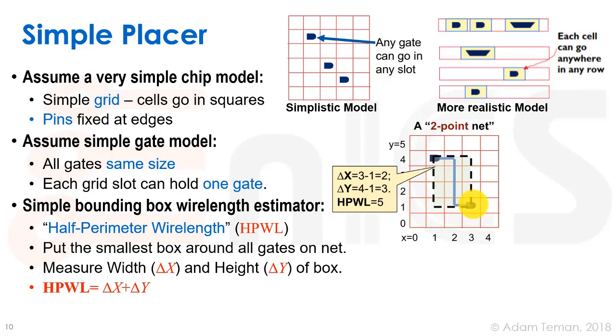In this case, this cell is at (3,1), so delta x is 3 minus 1 equals 2. This one is placed at (1,4), so 4 minus 1 is 3, and we get a half perimeter wire length of 2 plus 3, which equals 5.